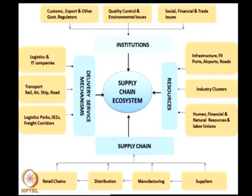Governance is a non-trivial issue when a supply chain is globally dispersed. You need connections, knowledge, and management skills. In the GRIP framework: G stands for governance, R stands for risk, I stands for innovation, and P stands for performance.